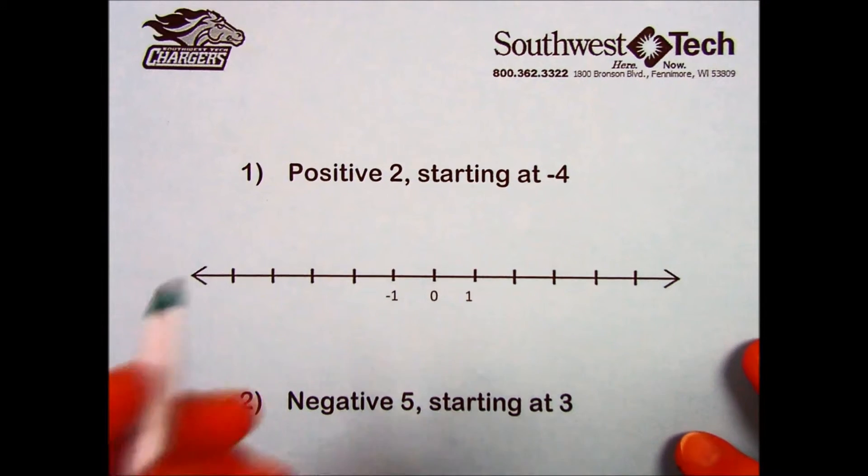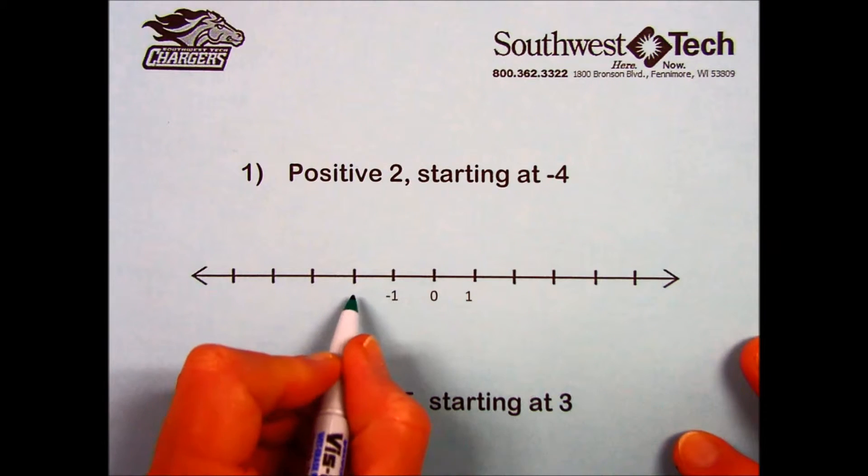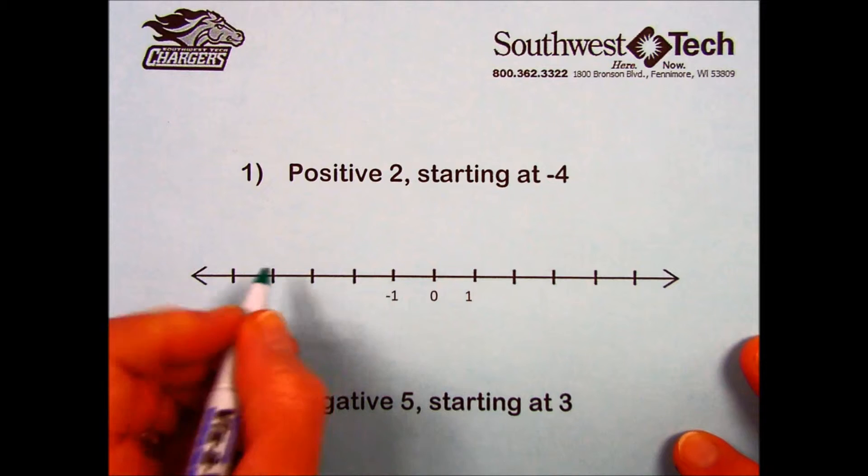So it's asking us to start at negative 4. I need to find that location on the number line. With the scale already indicated here, I have a negative 1, to the left is negative 2, negative 3, here's the negative 4 starting place.